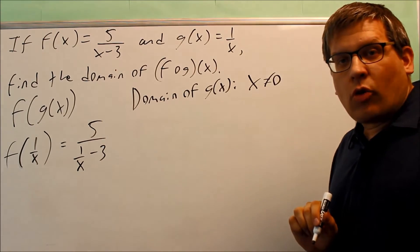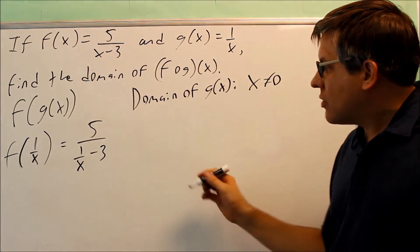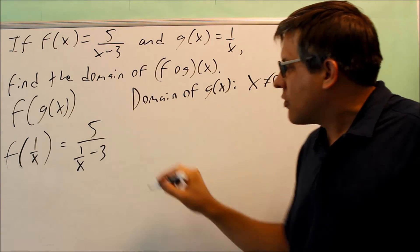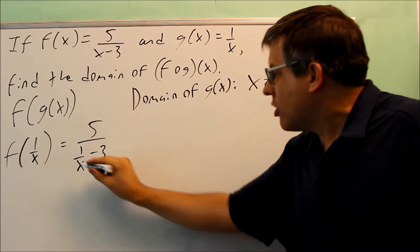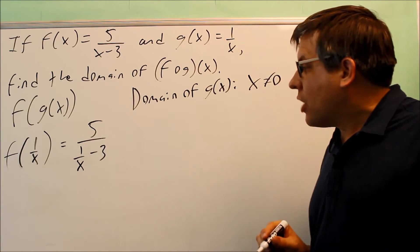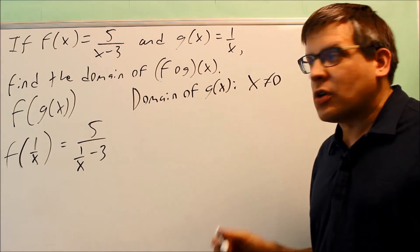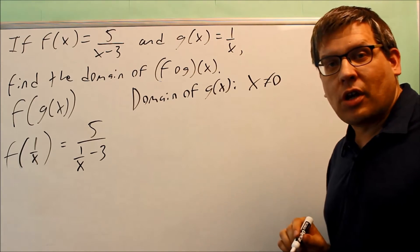You can tell right away the reason why we want to find the domain of g of x first. That's because if we look at this now in this form, we already see here that 0 is not going to be allowed in there because that part of the problem is going to be undefined. So that's why we have to consider the domain of g of x first because you're putting that into something else.